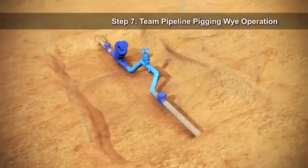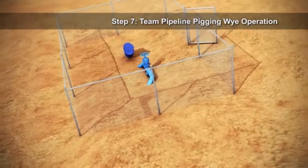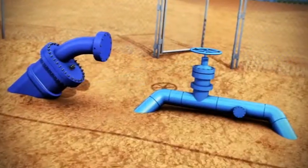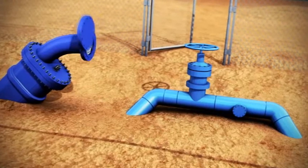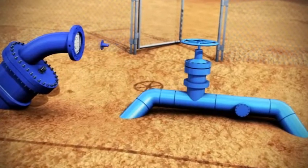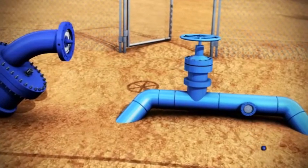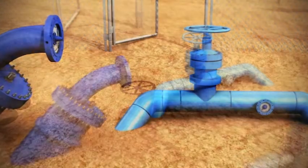Step 7: Team Pipeline Pigging Y Operation. Preparation is made to launch and receive the pipeline pig or in-line inspection tool. Blind flanges are removed. Completion plug holders and temporary isolation valves are installed.